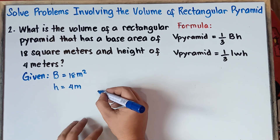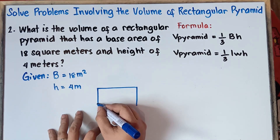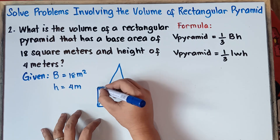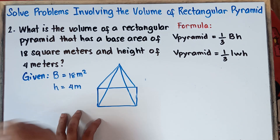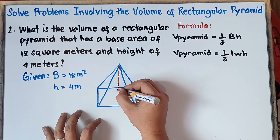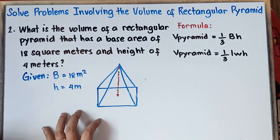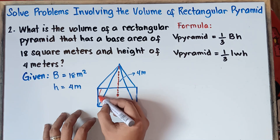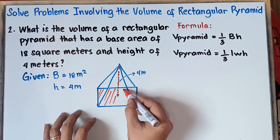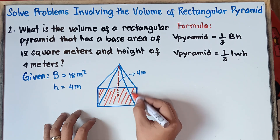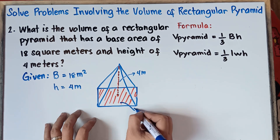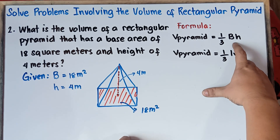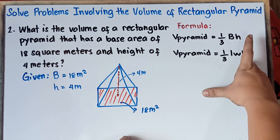Let's draw a rectangular pyramid for illustration. We have a given height of 4 meters, and the area of the base rectangle is 18 square meters. Therefore, we can use the first formula because we have the base area and the height.